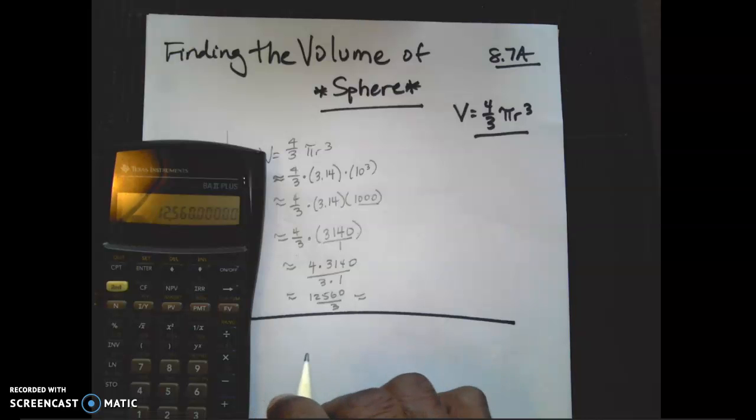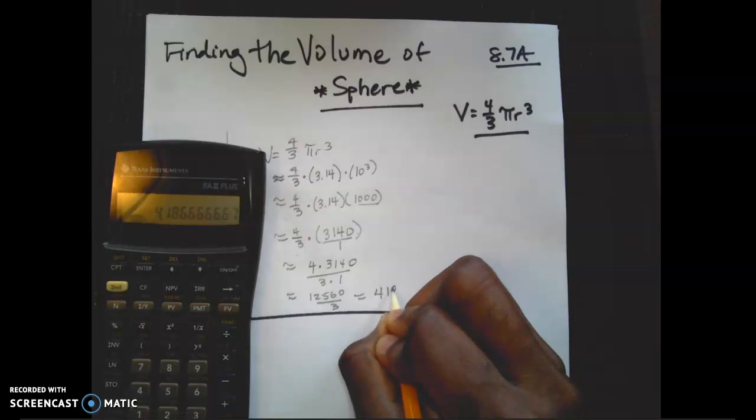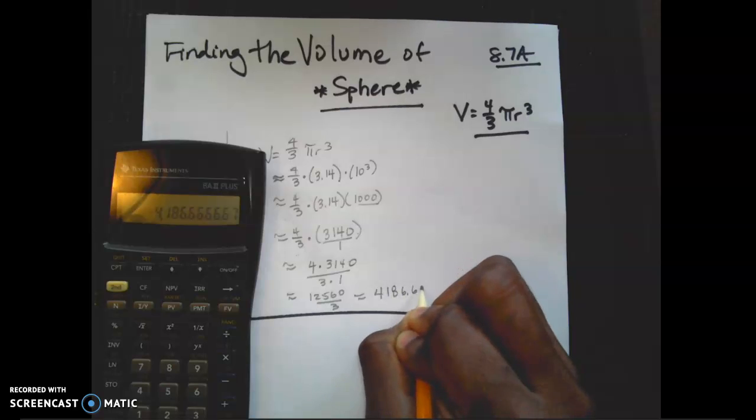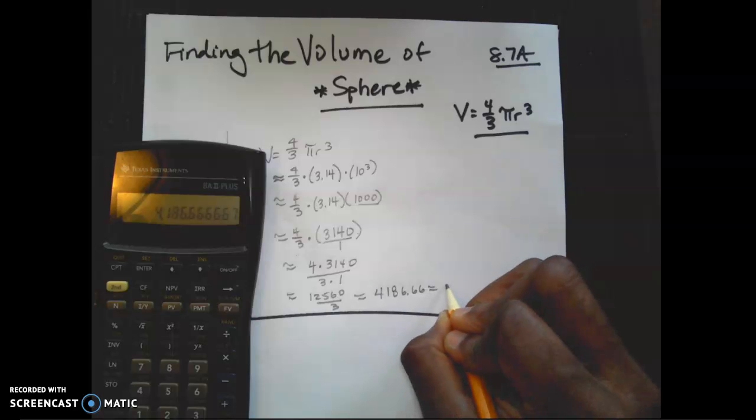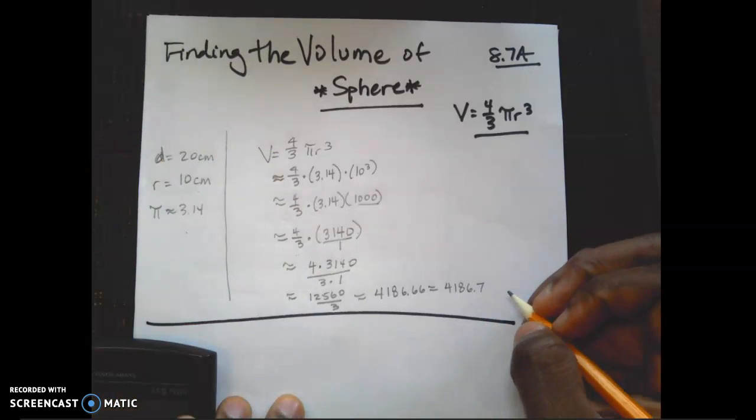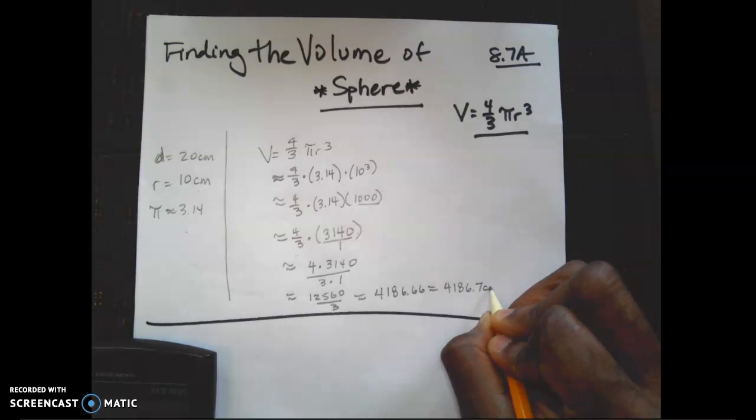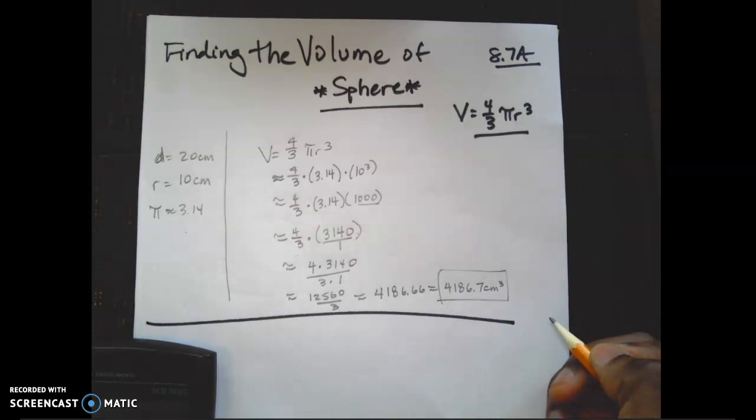And what is my approximation going to be now? I believe that it said that we needed to multiply to the nearest tenth. So I'm going to take that number, divide it by 3. That's any fraction. It's going to be 4,186.66. Rounding it to the nearest tenth will be 4,186.7. Bringing back my unit. In this case, my unit was a centimeter. So that becomes centimeters cubed. Box it up. 4,186.7 cubic centimeters.